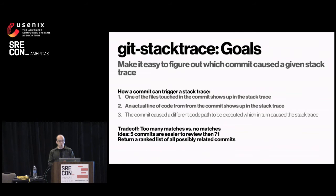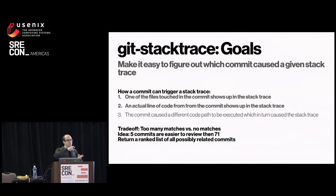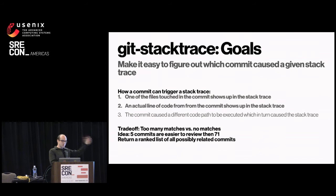There's a trade-off in how many results to return. Do you err on the side of false positives, returning four commits that could have caused the trace when really only one did? Or return no results when uncertain? Because a file touched by a commit might appear in the stack trace without actually causing the error. The goal is to return a ranked list of possibly related commits. Instead of saying 'we know for sure commit X caused this,' we say 'take a look at these four or five commits.' It's much easier for a human to review five commits than all 71.